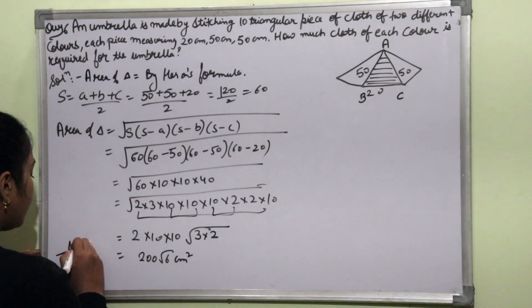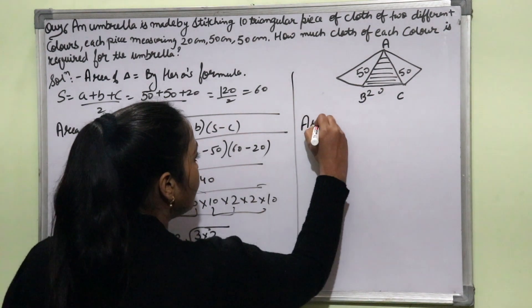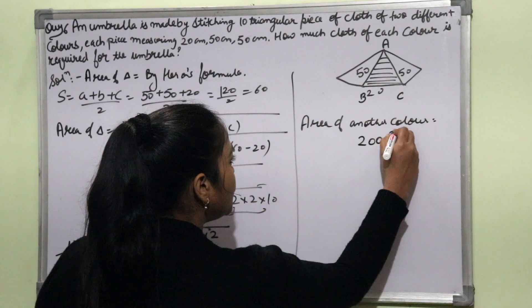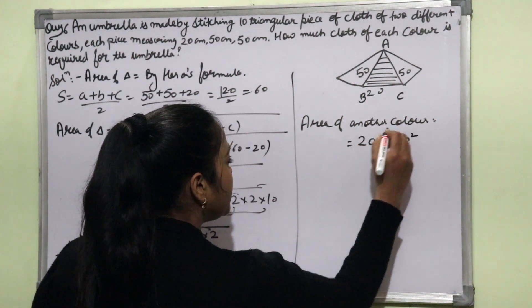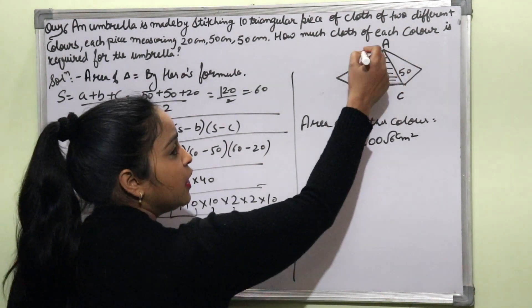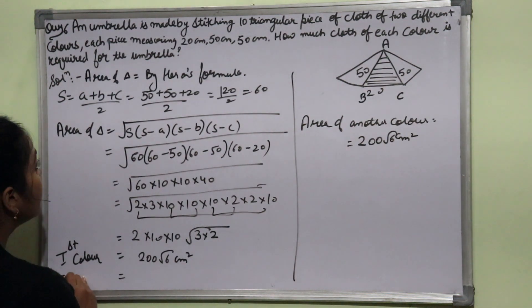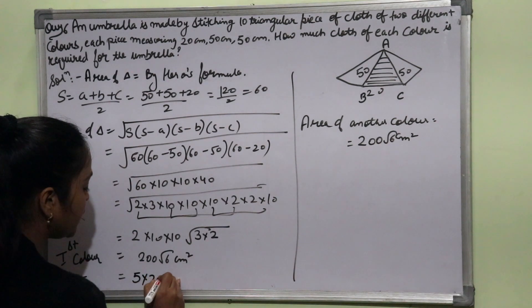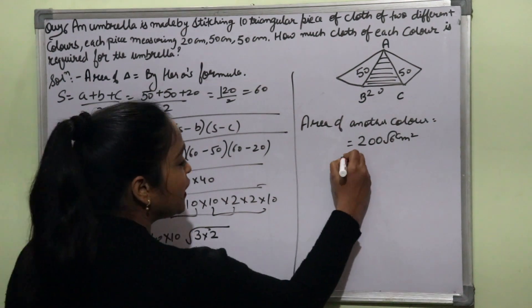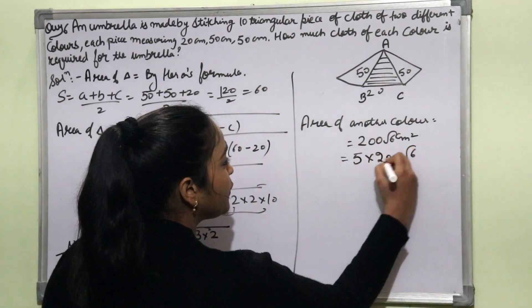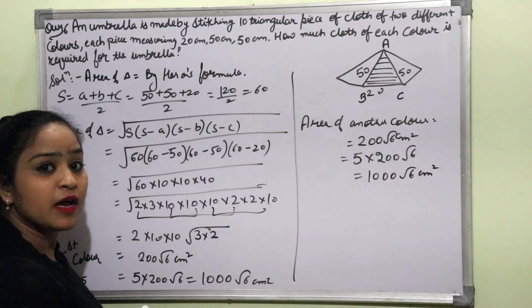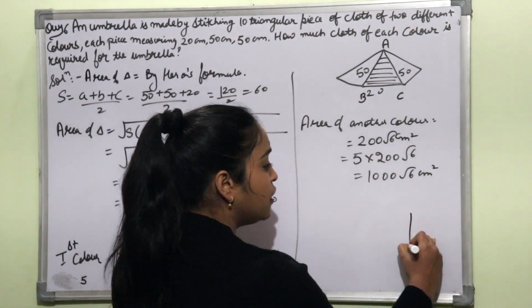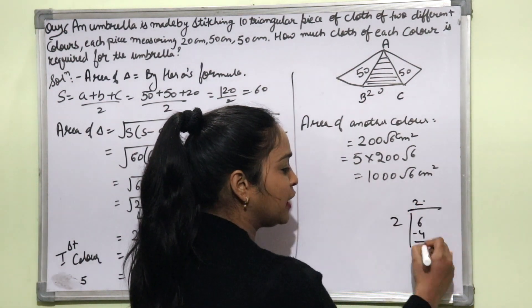This is the area for one triangular piece. Both colors have the same dimensions — 50, 50, and 20 cm — but different colors. The umbrella has 5 pieces of each color, so for each color: 5 × 200√6 = 1000√6 square centimeters. Both first and second color require 1000√6 cm² each.